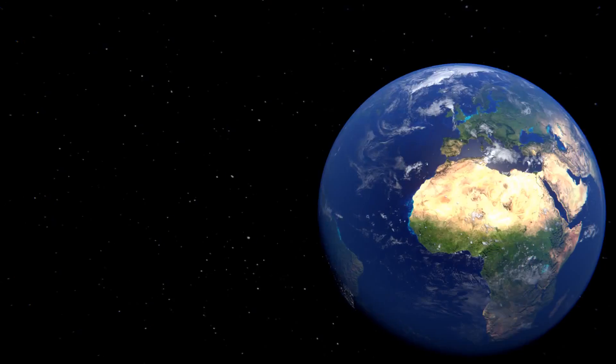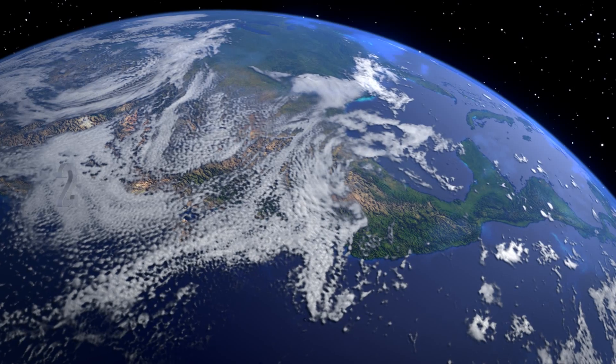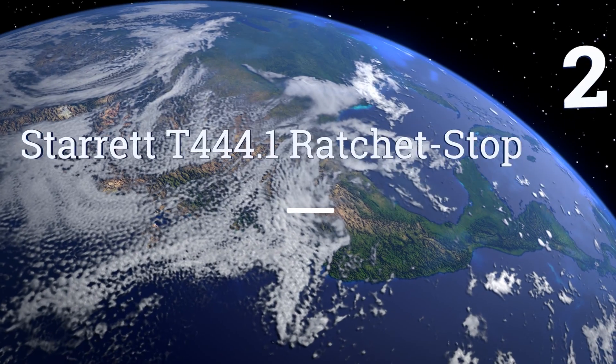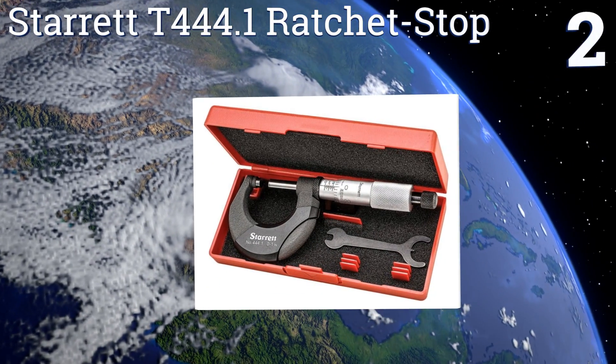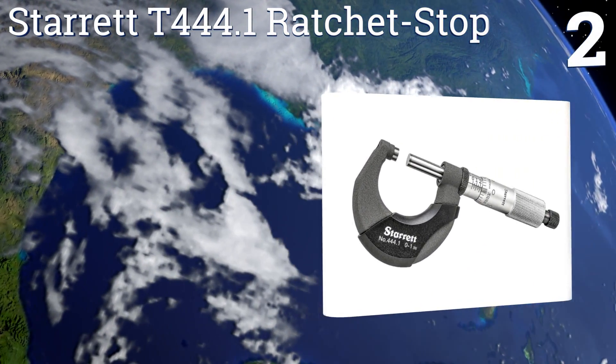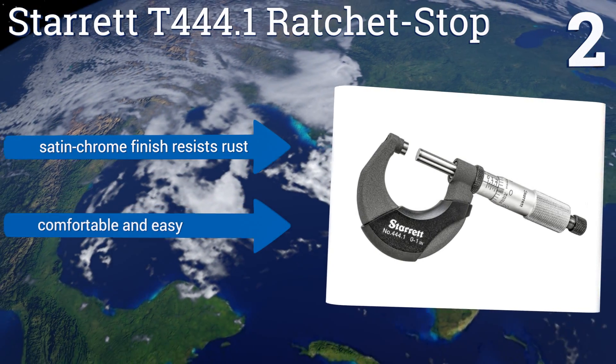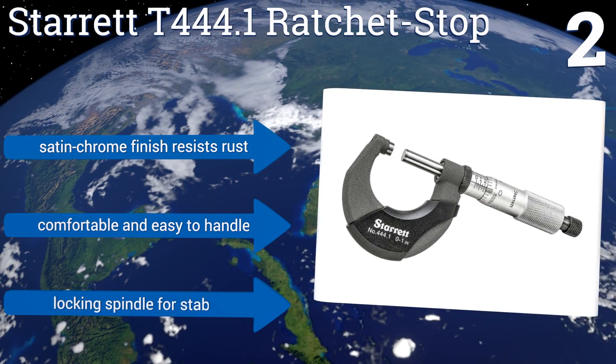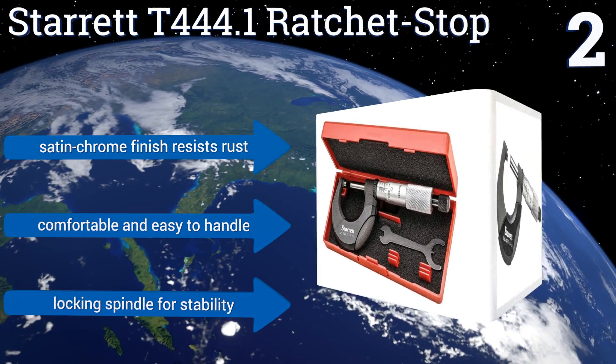At number two, maintain the tightest clearances in any shop using the Starrett T444.1 Ratchet Stop. With a renowned brand name reflecting superbly balanced construction, special heat insulators ensure that the high accuracy parts won't expand or contract over time. It's satin chrome finish resists rust and it's comfortable and easy to handle with a locking spindle for stability.